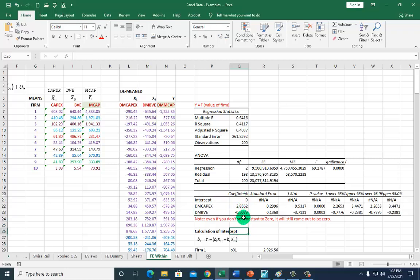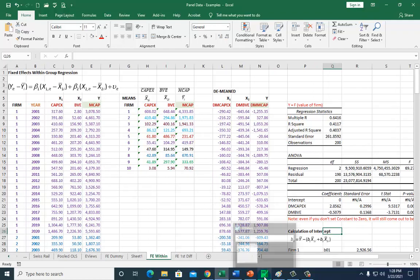In running this regression, you should set the constant to zero. But you don't really have to do that because it's still going to come out to be the same. And for good measure, we do the same on EViews.